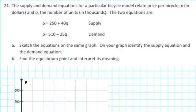The supply and demand equations for a particular bicycle model relate price per bicycle, P, in dollars, and Q, the number of units in thousands. The two equations are P equals 250 plus 40Q, that's the supply equation, and P equals 510 minus 25Q, that's the demand equation.